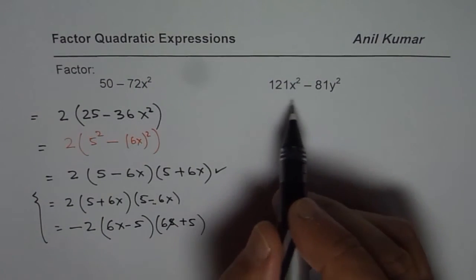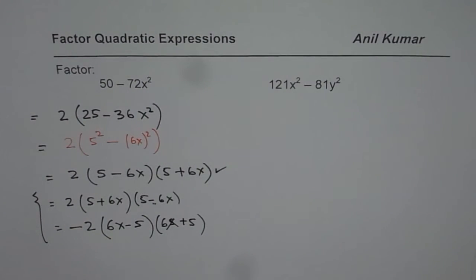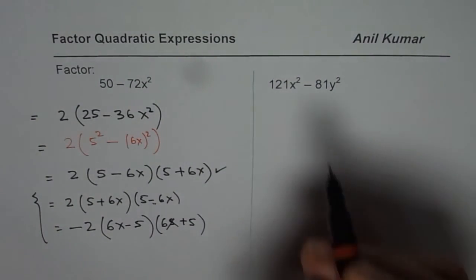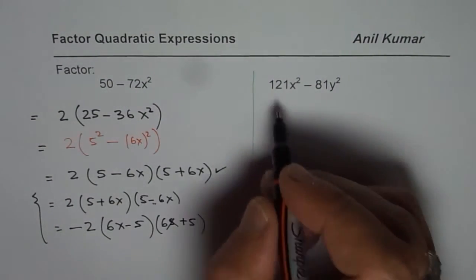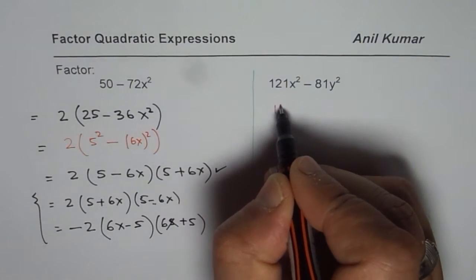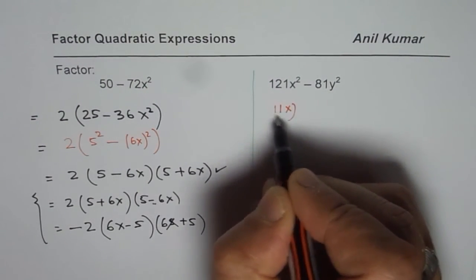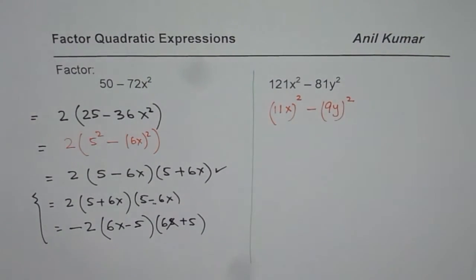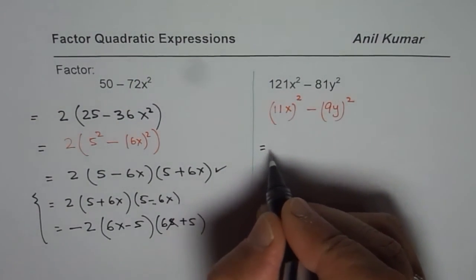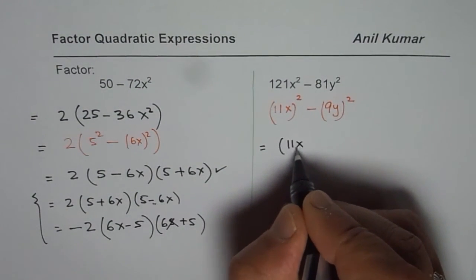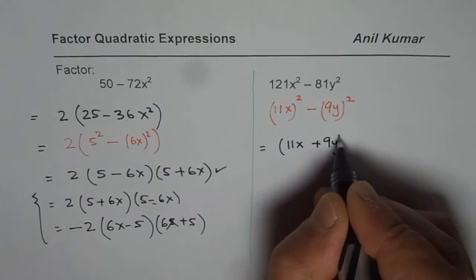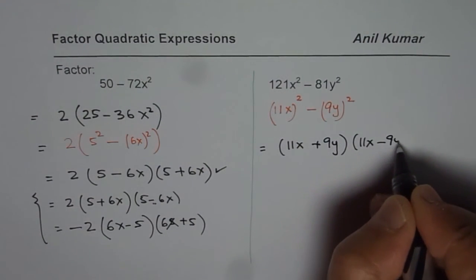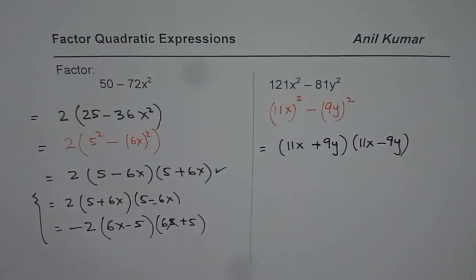Now let's look into the second example. This is kind of straightforward since we can straight away see that both these terms are perfect squares. 121 is 11 squared and then we already have x so we could think it like this and that is 9y whole squared. Since we have difference of squares we could factor it straight as 11x plus 9y times 11x minus 9y. So that becomes our answer.